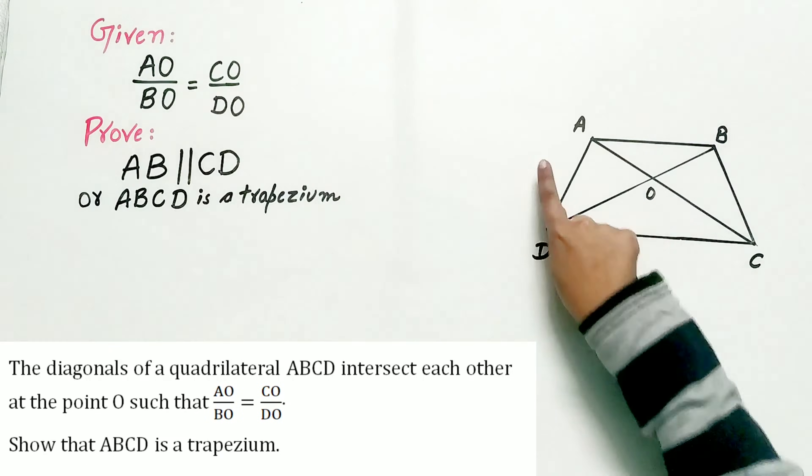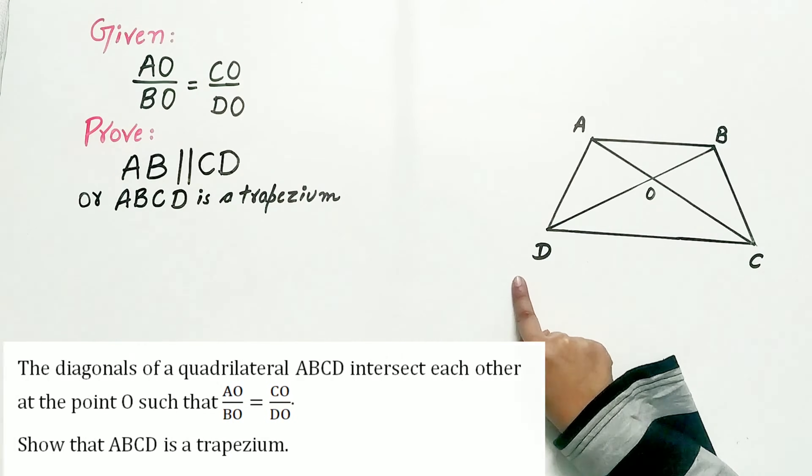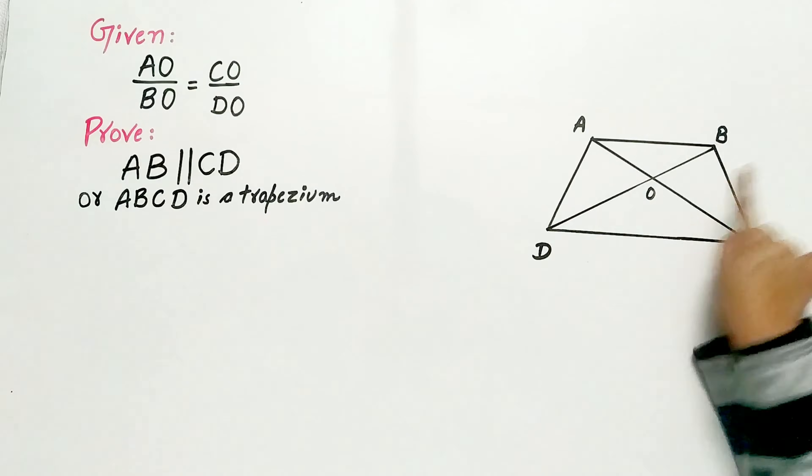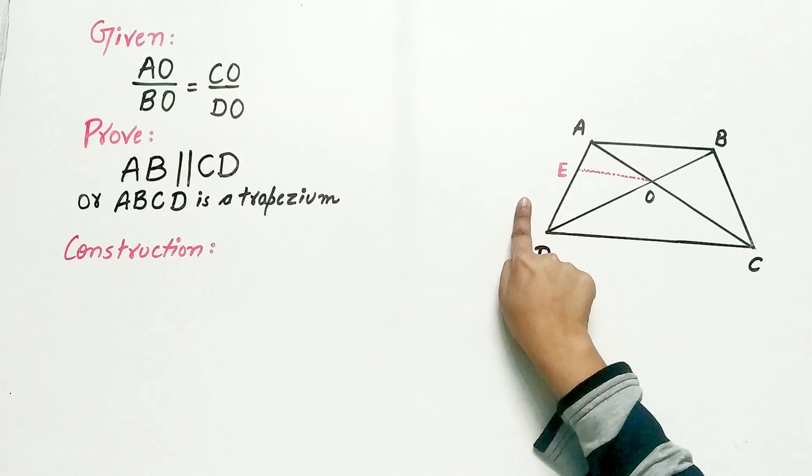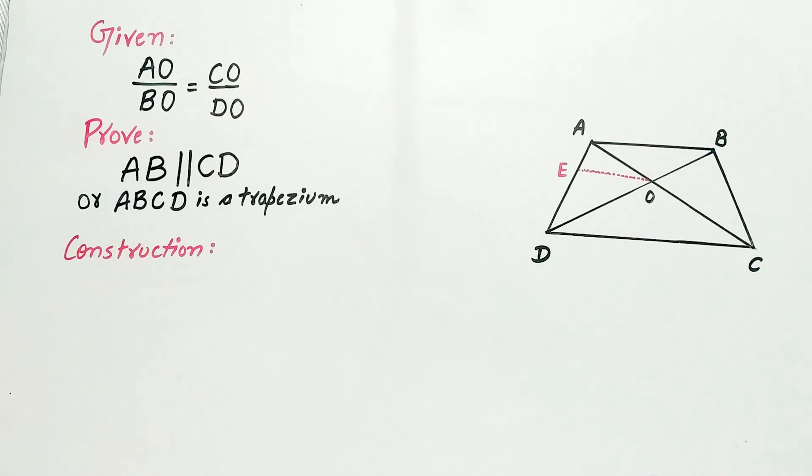Show that ABCD is a trapezium. So we have to prove that AB is parallel to CD, and for that join OE such that it is parallel to AB.